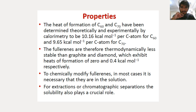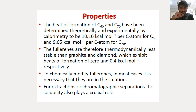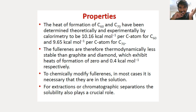Moving on to the properties: the heat of formation of C60 is 10.16 kilocalories per mole and that of C70 is 9.65 kilocalories per mole. These fullerenes are therefore thermodynamically less stable than graphite and diamond, which exhibit heats of formation of 0 and 0.4 kilocalories per mole respectively.